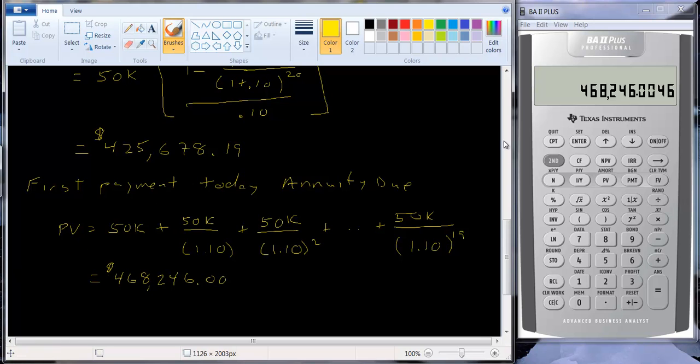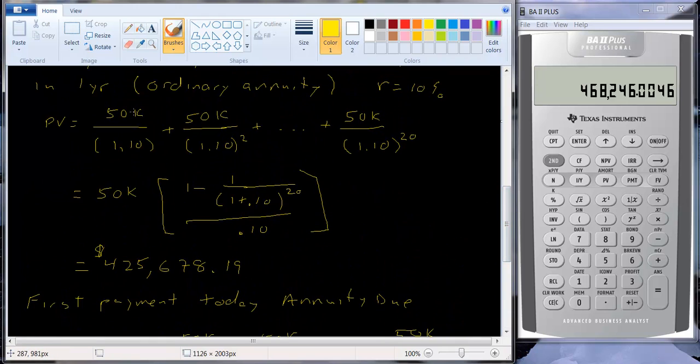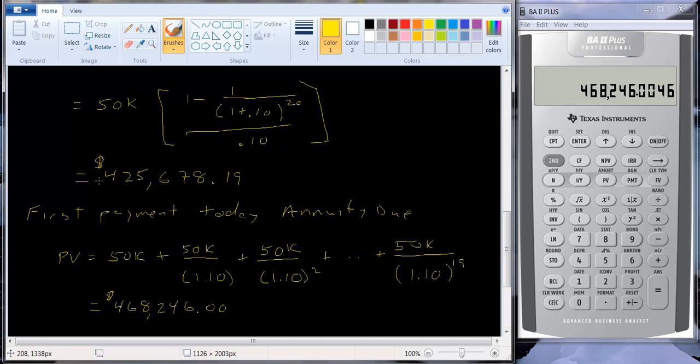What else could I do? If I look back to this equation here, if I multiplied everything by 1.10, what would happen? This would disappear. This would be raised to the first power. This would be raised to the 19th power. So I should be able to take the answer I had before, 425,678.19, and then just multiply it by 1.1, and I get 468,246. I get the same answer.